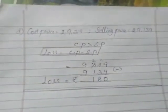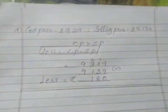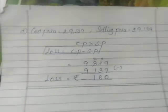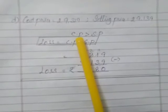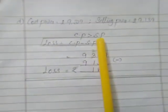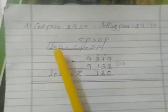Next D sum I have written. Cost price 9,319. What is selling price? 9,139. Here, cost price is more than the selling price, so that is loss.